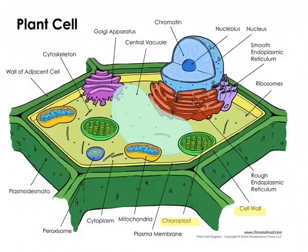Plant cells do not have the same flexible outer membrane that animal cells do. However, they still do have a cell membrane — it's just inside of the cell wall. That's because the cell membrane allows things like water and small molecules to pass in and out of the cell. The cell wall does not, so the plant cell still needs to have a cell membrane.